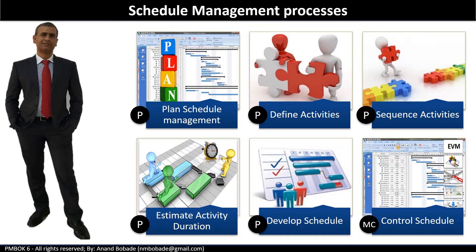So the first five processes are part of the planning process group, and the last process — control schedule — is under the monitoring and controlling process group. Control schedule is the process of monitoring the status of project activities to update the project progress and manage changes to the schedule baseline to achieve the intended plan.